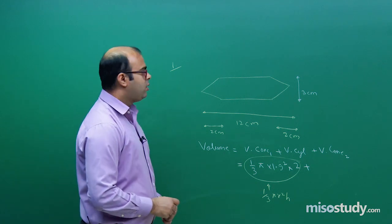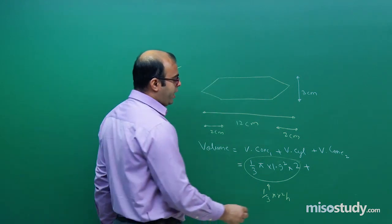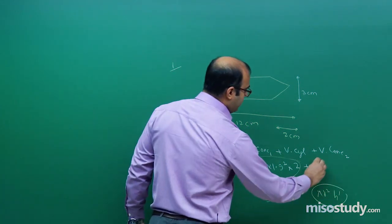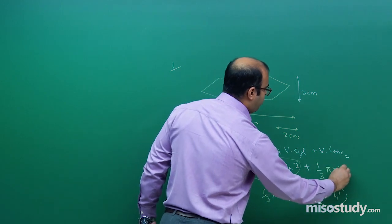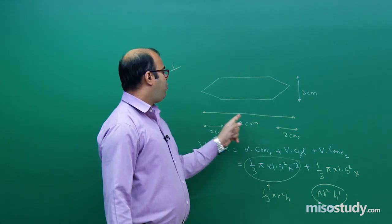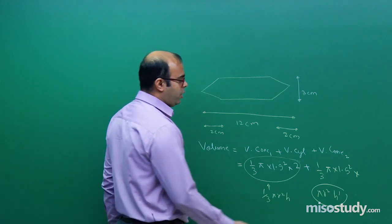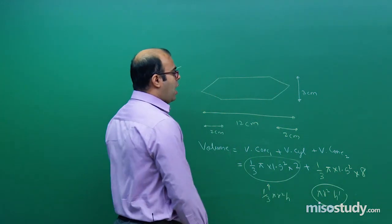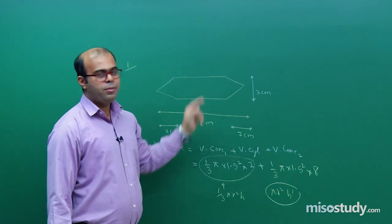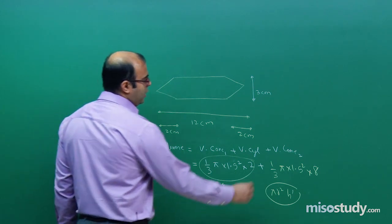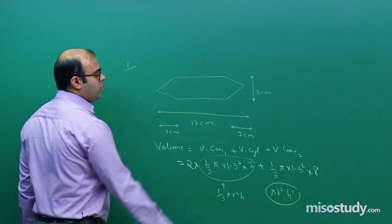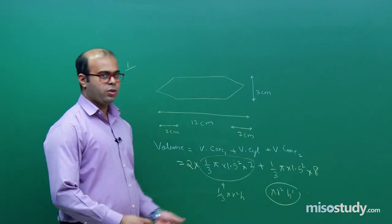For the cylinder, its volume is πr²h′, where the height h′ = 12 − 2 − 2 = 8 cm and radius = 1.5 cm. Since both cones have the same height and same base diameter, we can combine their volumes as twice the volume of one cone. So cone 1 + cone 2 = 2 × (1/3 πr²h).